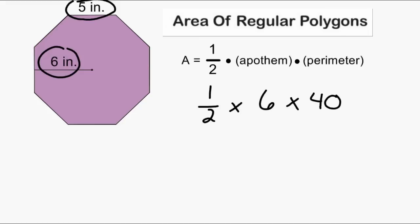The next thing that we can do is multiply 6 by 40 which is 240. So after we figure out what 1 half of 240 is, that will give us the area of our regular octagon. You can ignore the 0 and just cut 24 in half which would be 12 and then add that 0 back. So the area of our regular octagon is equal to 120 square inches.